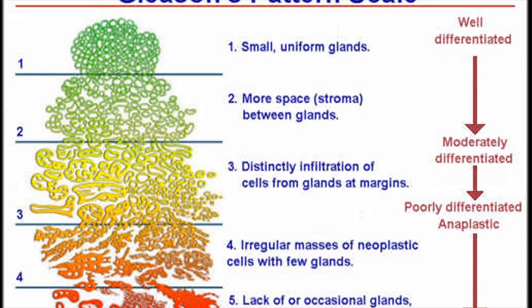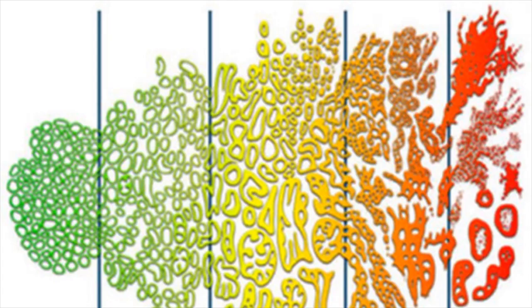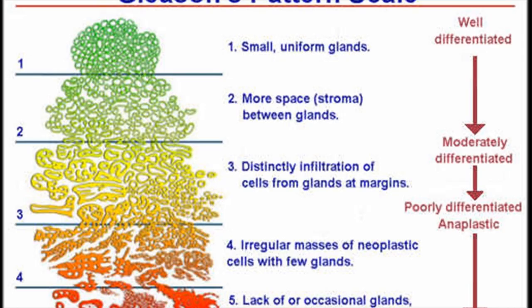How the Gleason Score is Determined: The pathologist gives the prostate biopsy tissue a grade of 1 to 5, with 5 as the worst grade of tumor pattern. Then the pathologist looks at the individual cells in the tumor pattern and grades the cell types from 1 to 5, with 5 being the most aggressive cancer cell type.